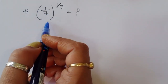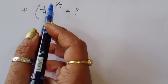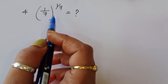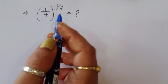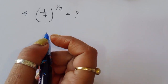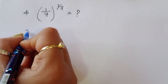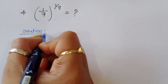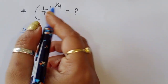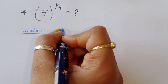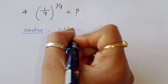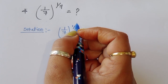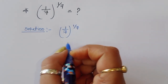The question is: given (1/7)^(1/7), what is it equal to? We have to find the value of this term without using a calculator. Let's try how to solve this.